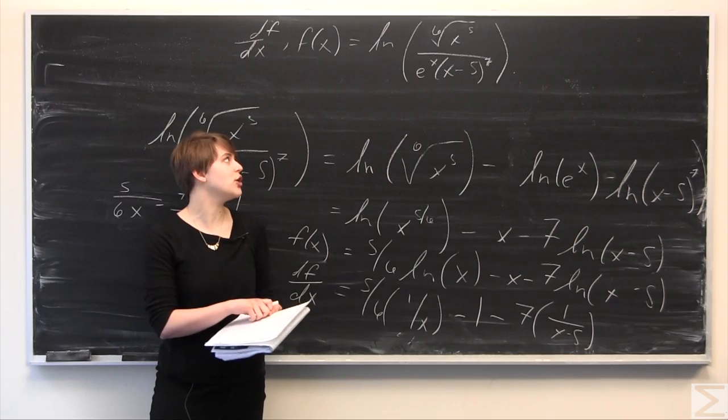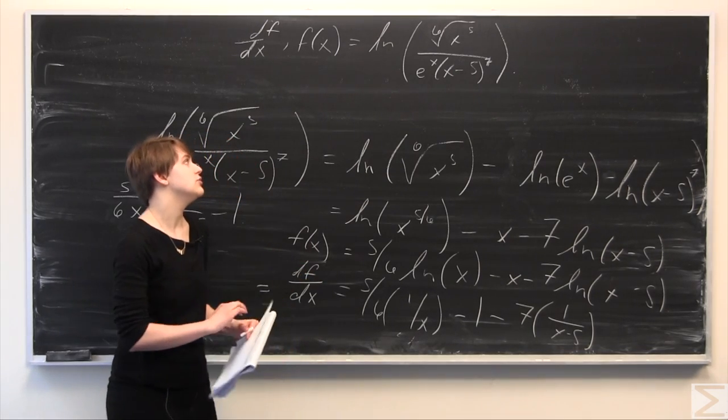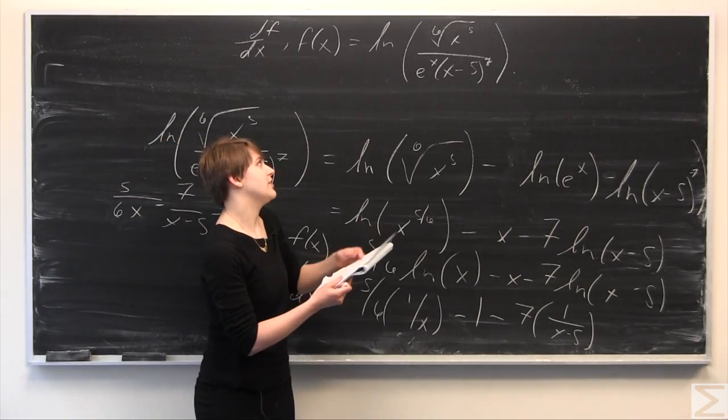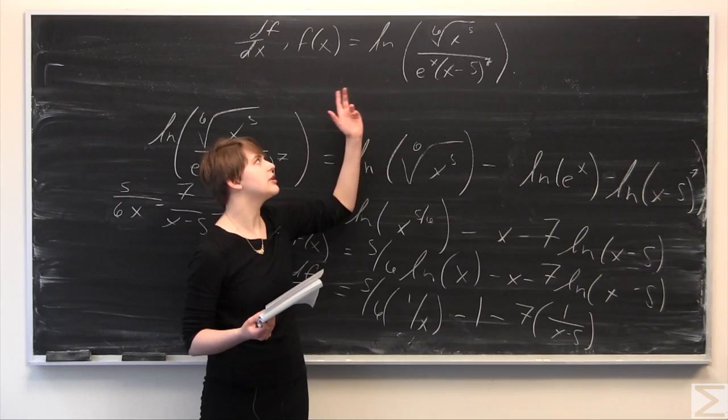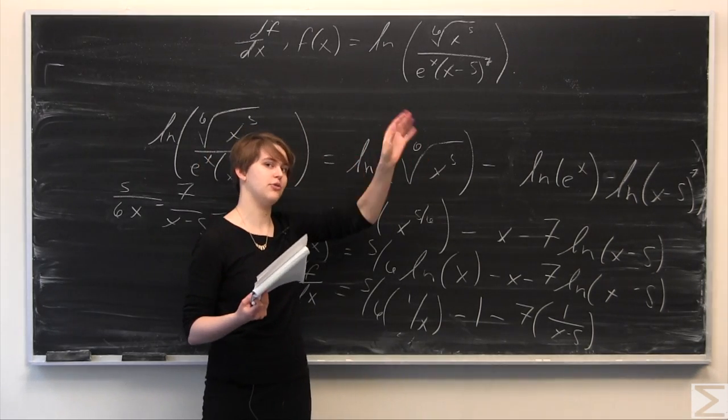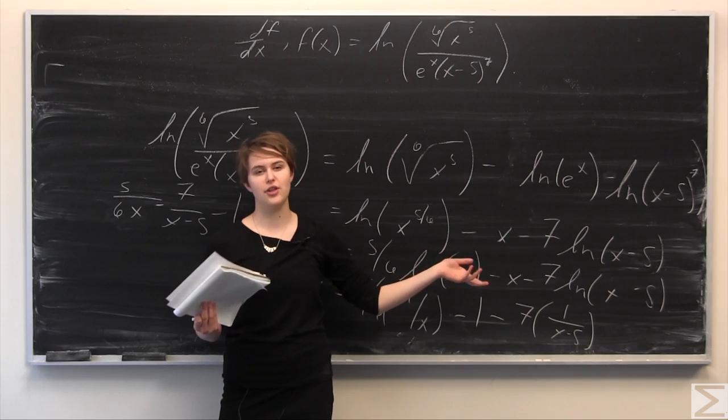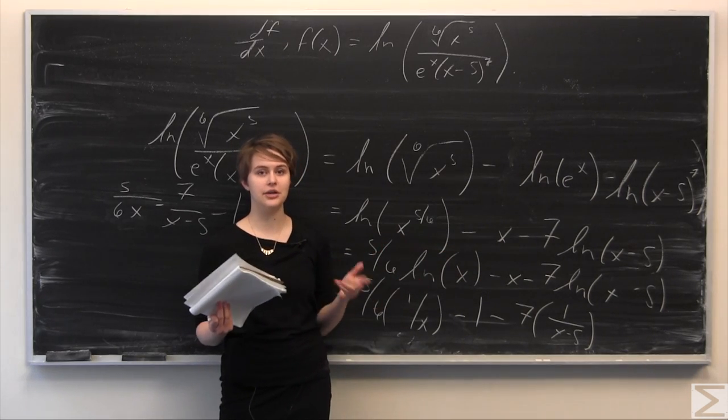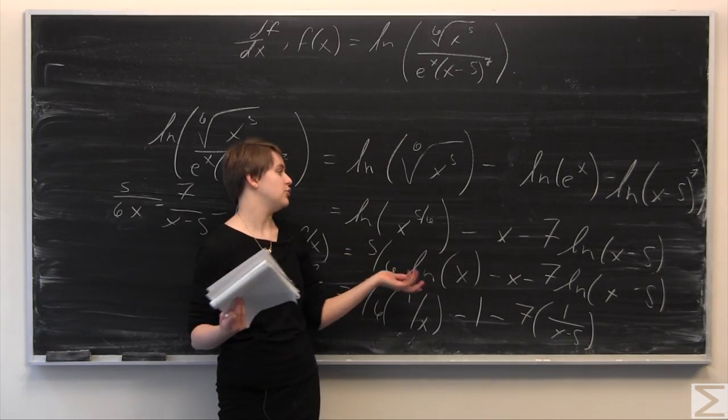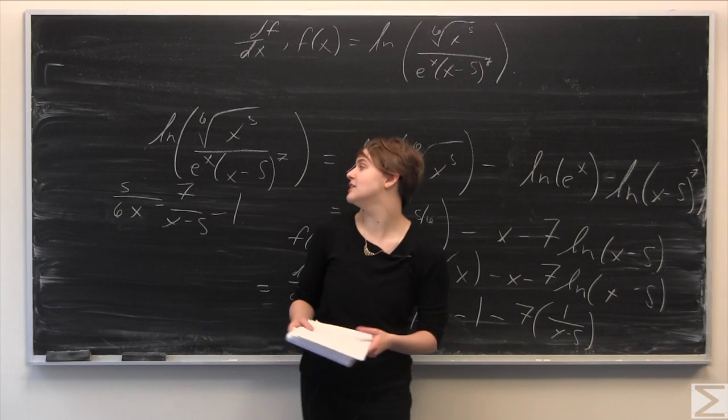You don't really need to do that last step. From the beginning we could have used the chain rule and the product rule and the quotient rule, but that would have gotten pretty complicated pretty fast. So we used the properties of logarithms to simplify everything down, and it made it a lot easier to calculate our derivative.